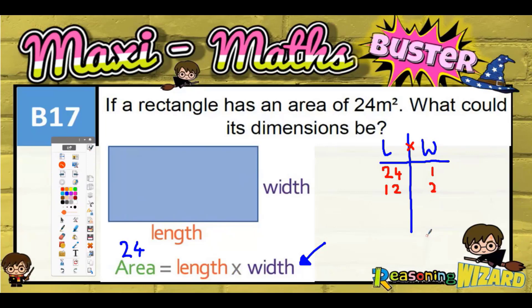You could have 3 times 8, length 8 width 3. You could have 6 times 4, 4 times 6, length 6, width 4.